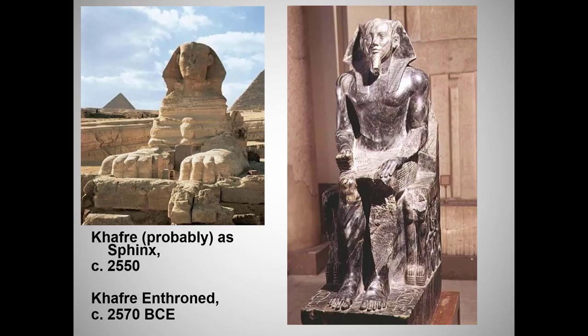These statues are both portraits of the Fourth Dynasty pharaoh Khafre. There is a little dispute about the Sphinx's identity, but not much. The statue on the right is not one of your required works — I'm going to use it to review stylistic conventions for portraying pharaohs, since it offers such a clear and classic example of Egyptian sculpture. Note that this statue also showed up in the Khan Academy reading.